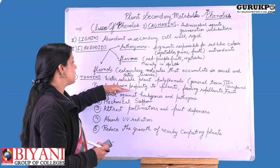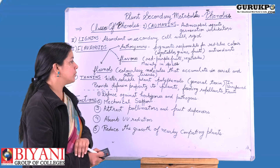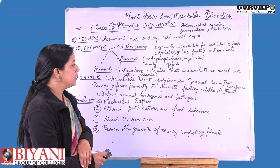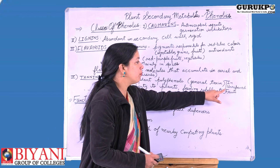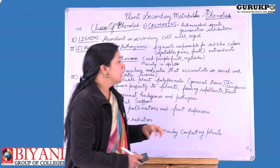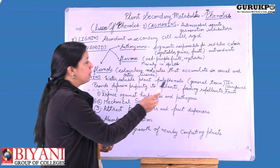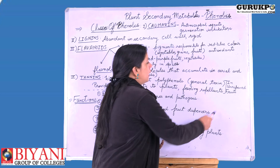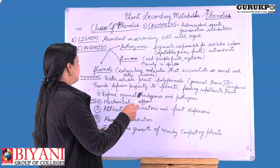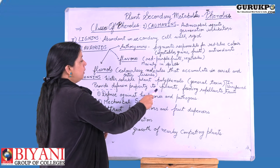Tannins provide defence against plant feeders and herbivores, and so they are also known as feeding repellents. They are found in high quantities in unripened fruits. Herbivores avoid eating unripened fruits because these are toxic to them. So tannins act as a defence mechanism for the plant.